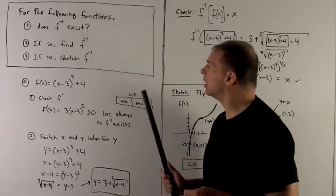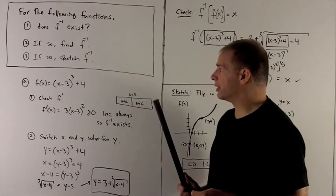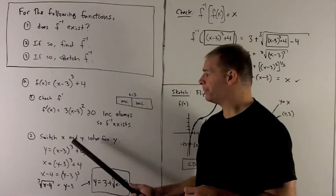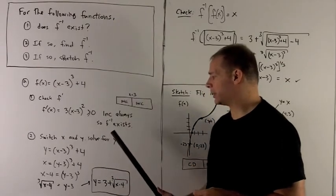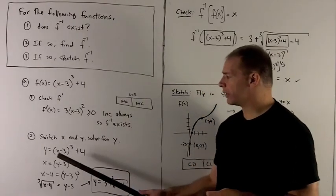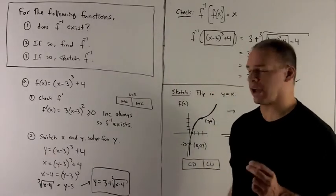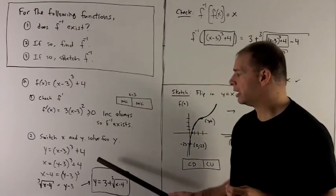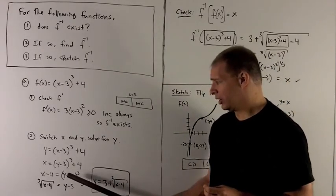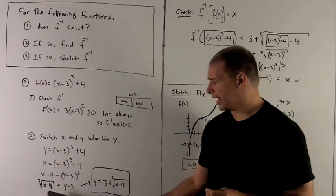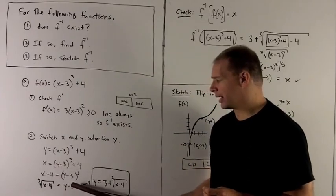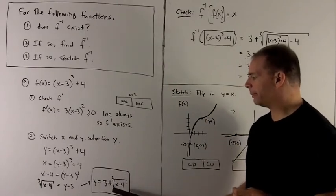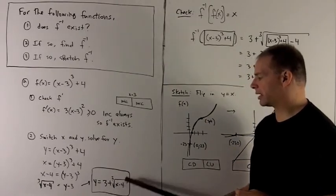Now let's take a look at finding f inverse, the function. To do this, we're going to take our original function, switch x and y, and then we solve for y. So if y was equal to (x minus 3) cubed plus 4, I'm now going to be looking at x equal to (y minus 3) cubed plus 4. The 4 can go to the other side. I can then cube root both sides. That's going to leave me with y minus 3, and then I just push the 3 to the other side, which gives me y equals 3 plus cube root of (x minus 4).